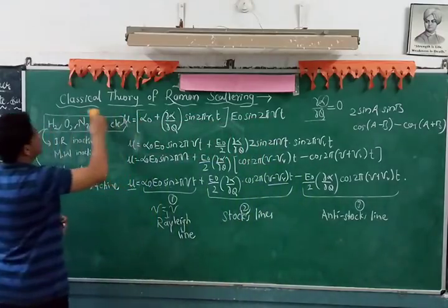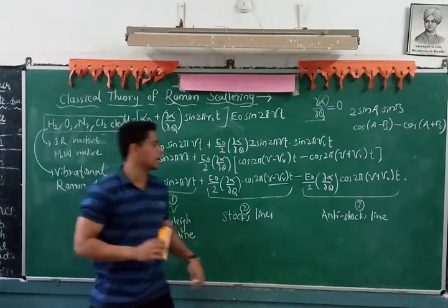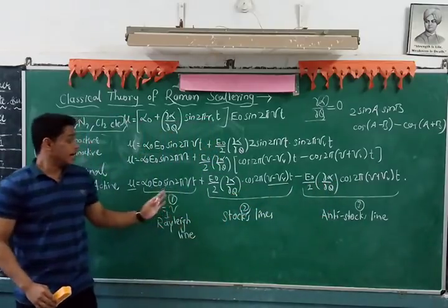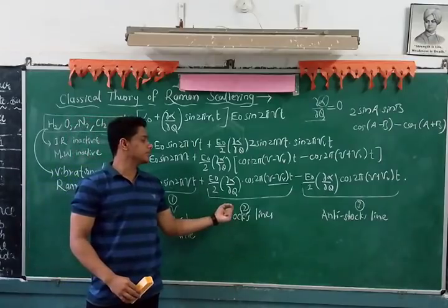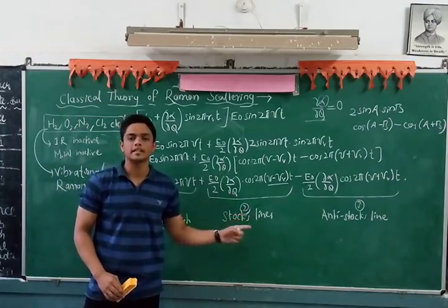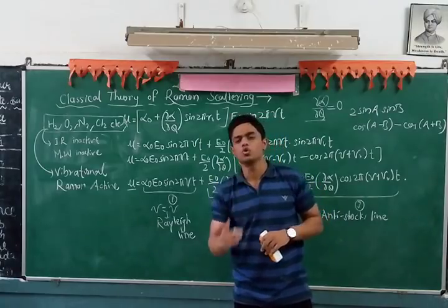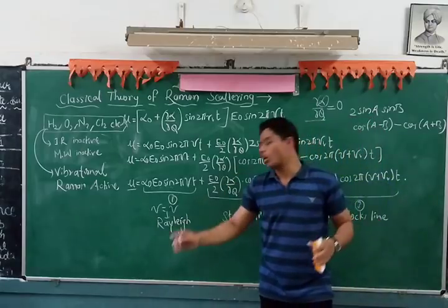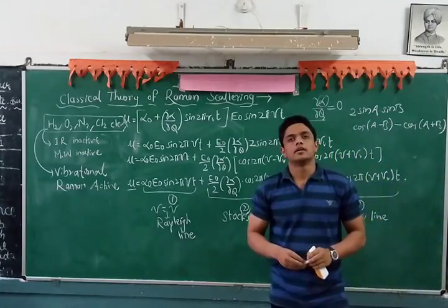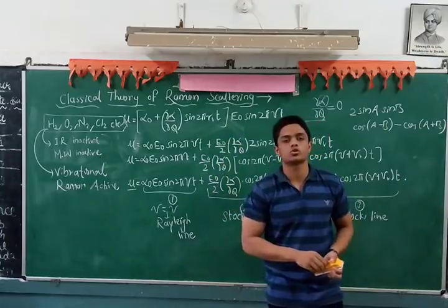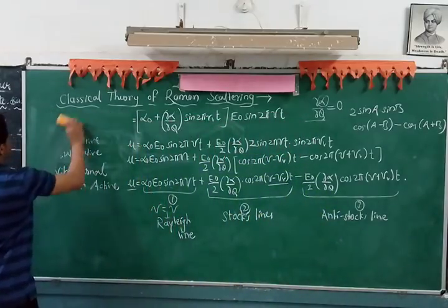In general, in a medium we observe only a few Stokes and anti-Stokes lines while the remaining are Rayleigh lines, so the intensity of Raman lines is low. To increase this intensity, there is an advancement called Surface-Enhanced Raman Spectroscopy (SERS), which we will study in further classes. This concludes the classical theory of Raman scattering.